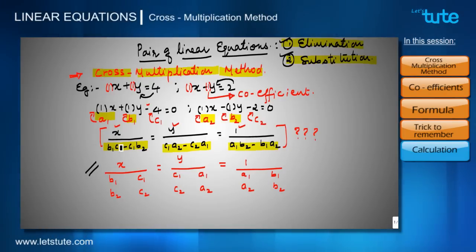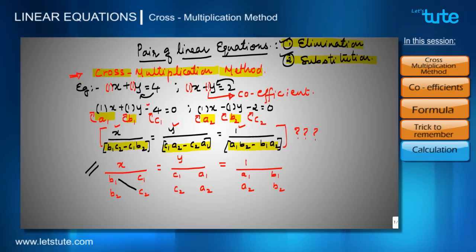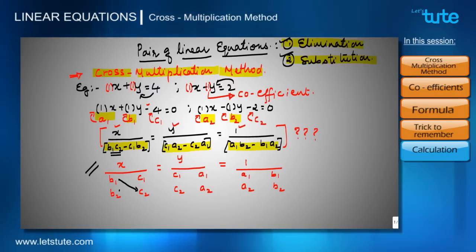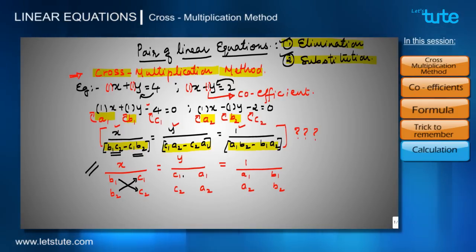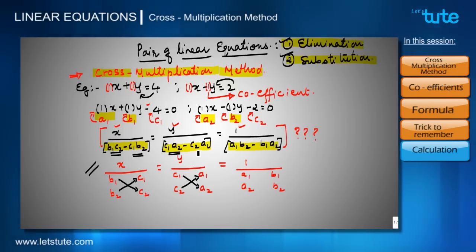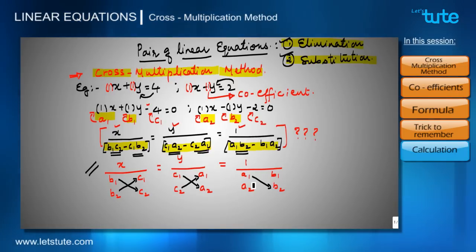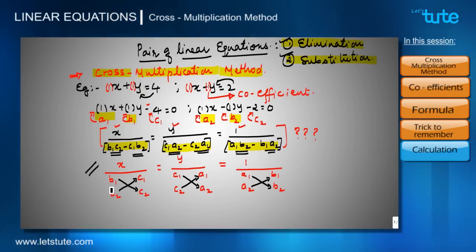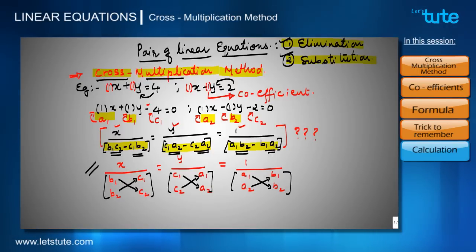Now we will learn how we got these denominators. b1 is multiplied with c2 to get b1·c2, and b2 and c1 are multiplied to get c1·b2, and they are subtracted. Similarly, c1 is multiplied by a2 to get c1·a2, and c2 is multiplied by a1 to get c2·a1, and they are subtracted. Similarly, a1 is multiplied by b2 and a2 is multiplied by b1, and they are subtracted. You can see that the terms in these denominators are cross multiplied — therefore it is called the cross multiplication method.